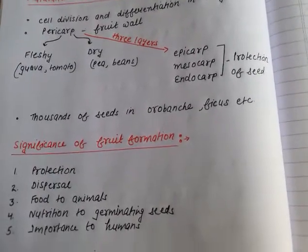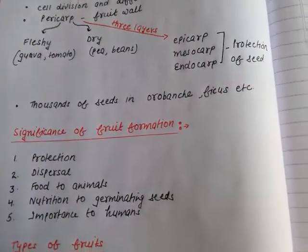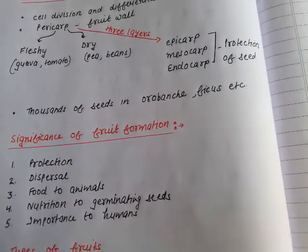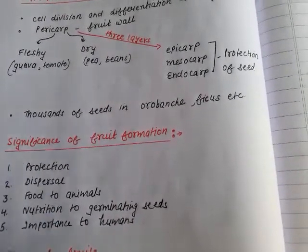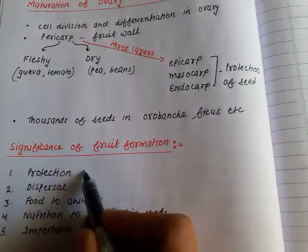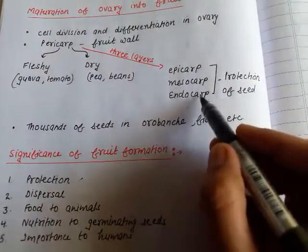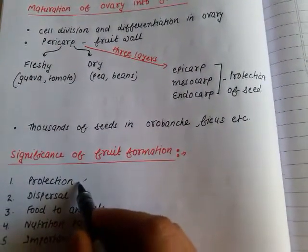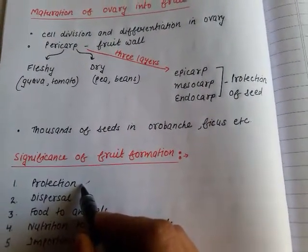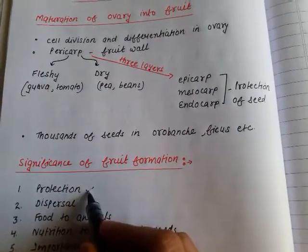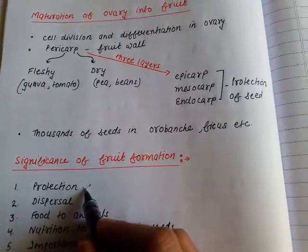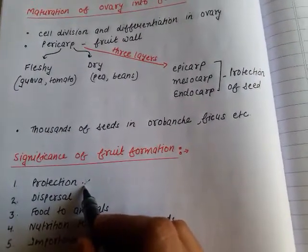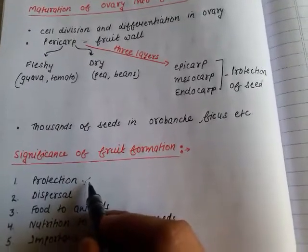Now, what is the importance of fruit formation? The first importance is protection. As mentioned, the three layers protect the seed. Developing fruits protect the developing seeds from mechanical injury, from insects, and from unfavorable climatic conditions.